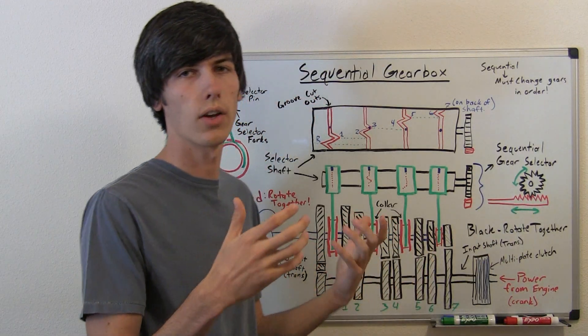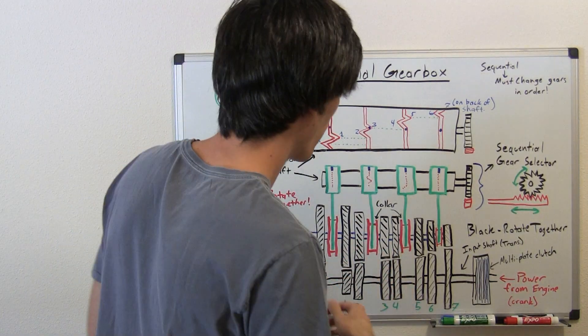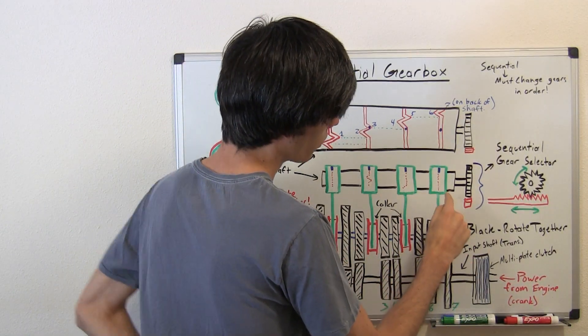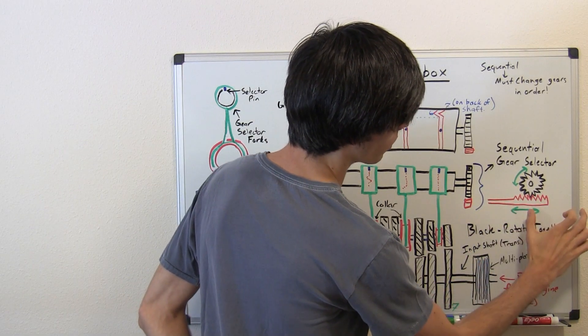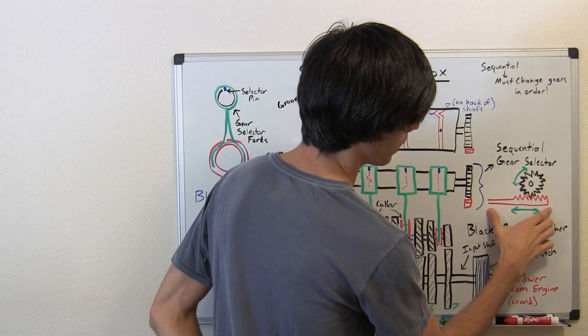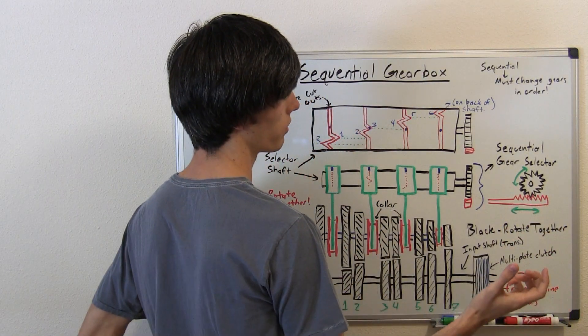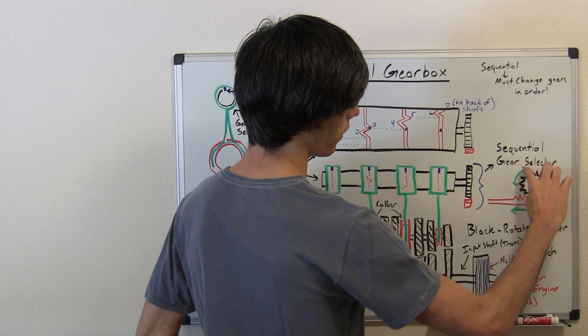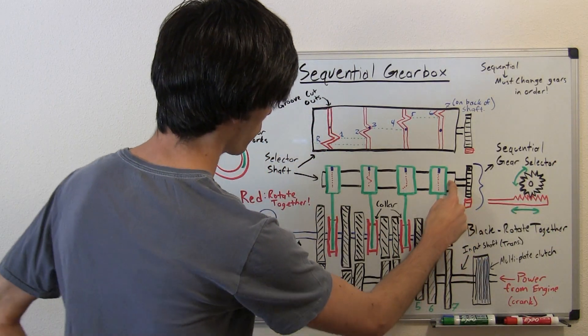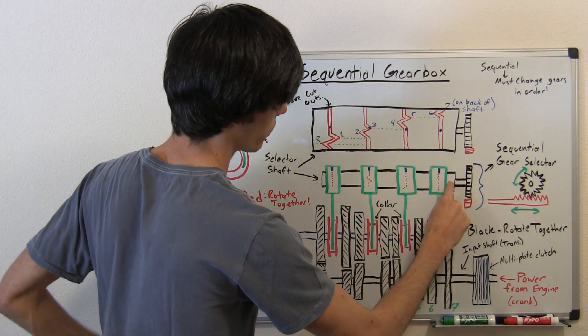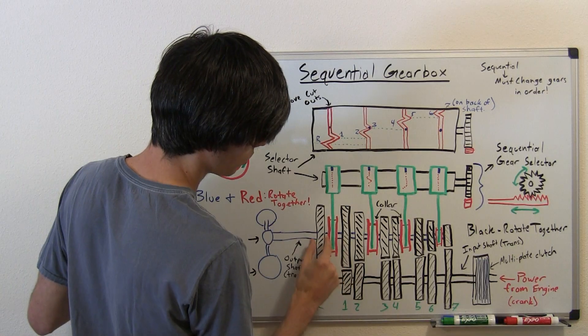When the driver says, I need to upshift, he'll press a paddle or flick some switch, something will happen, and he'll upshift. When he does that, this selector here is going to move one way or the other. That's what the driver is making occur. So he's going to push that one way or the other, depending if you want to upshift or downshift, and that's going to turn this gear. When this gear turns, it's connected to this selector shaft, and when this selector shaft turns, it forces one of these green selector forks into a certain gear.